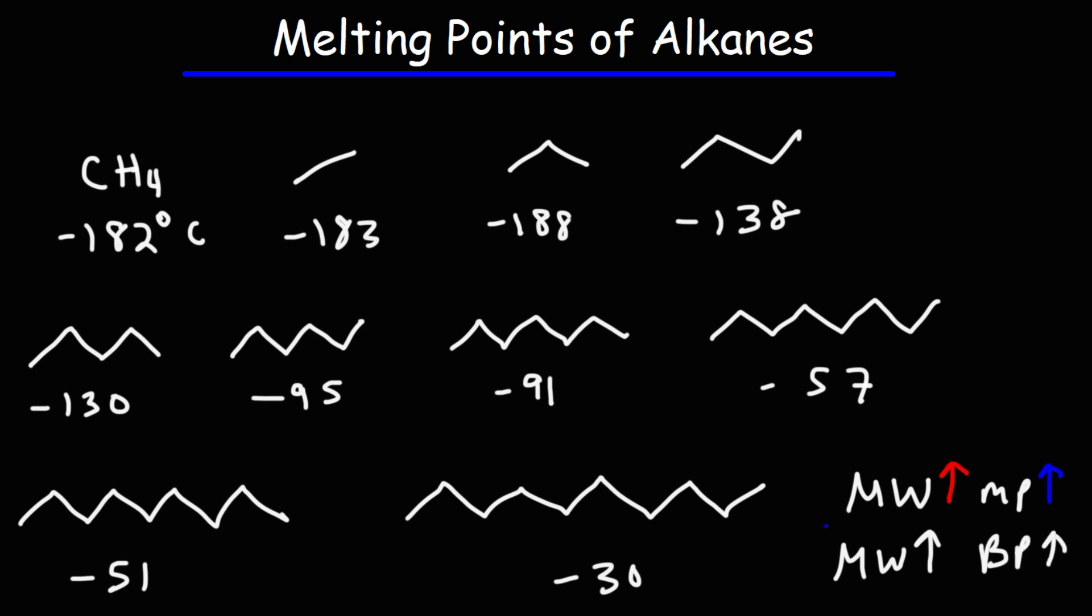But the melting point of alkanes has some unusual features. First, the trend doesn't really work for the first three alkanes: methane, ethane, propane. As we go from negative 182 to negative 183, the melting point is actually decreasing. And going from ethane to propane, it decreased even more.